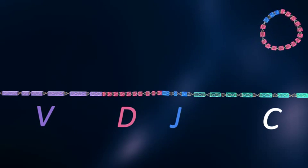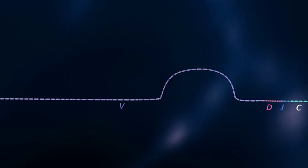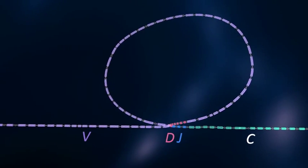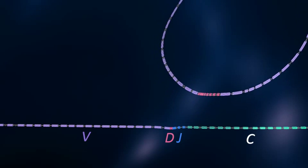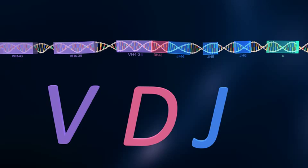Next, a V gene segment is selected in a random fashion and merges with the rearranged D and J segments. Again, the intervening gene segments are discarded. As we take a closer look, we have now made one version of thousands of possible combinations of these V, D, and J gene segments.